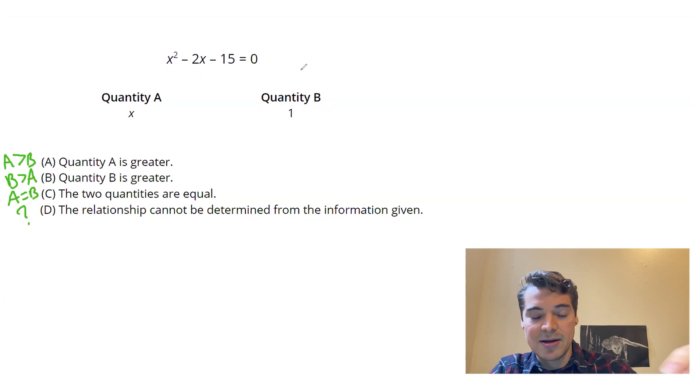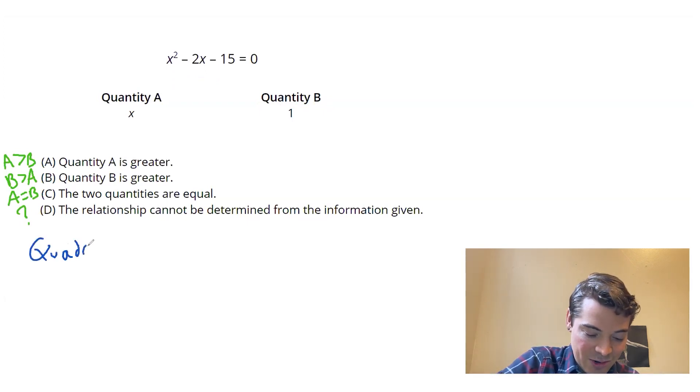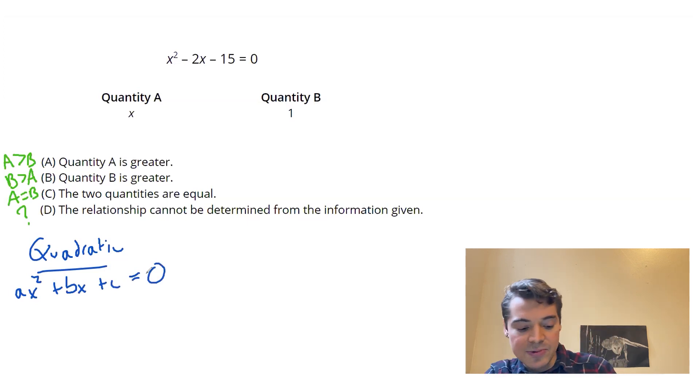And what that comes down to is recognizing this is a quadratic. Basically, all that means is when you see a square on a variable, you're looking at a quadratic. And the generic form is that ax squared plus bx plus c equals zero.